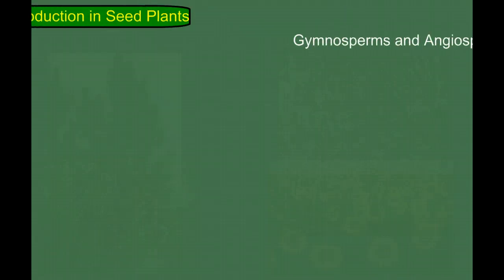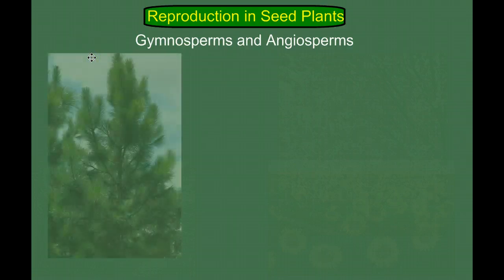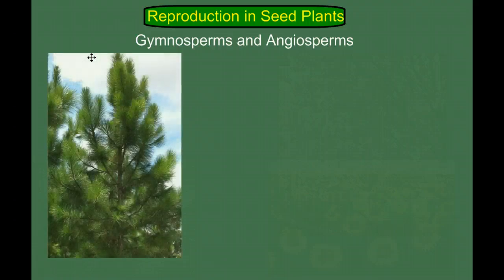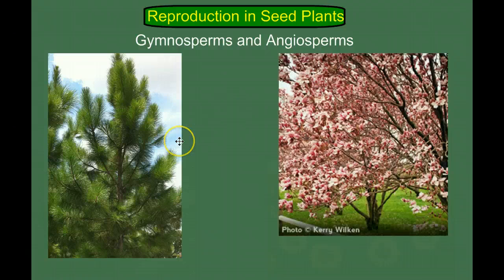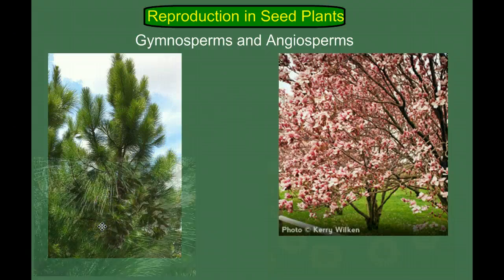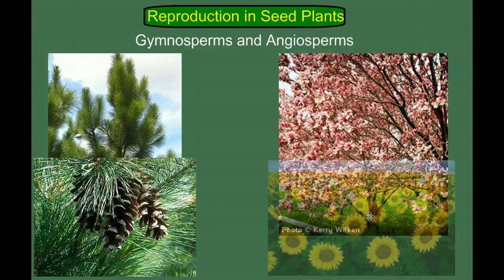Welcome back to our video series on plant diversity and evolution. In this video, we're going to look at reproduction in seed plants, gymnosperms and angiosperms. We're going to use the pine tree as our poster child for all gymnosperms, and basically any flowering plant to represent the angiosperms. Remembering that in the gymnosperms, or in the pines at least, the reproductive structures are cones, and in the angiosperms, they're flowers.